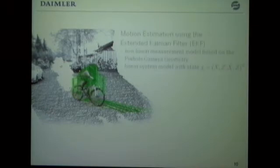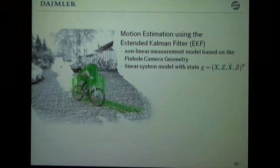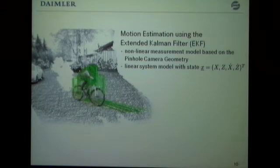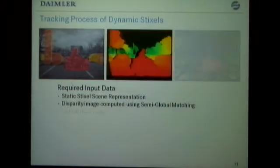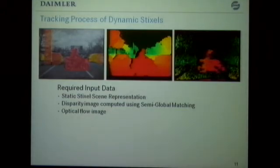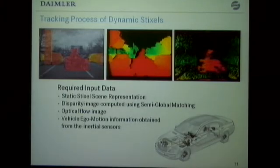To estimate this kind of information, we rely on extended Kalman filters. We have a non-linear measurement model based on pinhole camera geometry, and a linear system model with state information consisting of longitudinal position and speed, and lateral position and speed. In order to track Stixels over time, we use the static Stixel representation, disparity images, and optical flow images which encode pixel displacement from one time step to another. We also use ego-motion information obtained by inertial sensors.